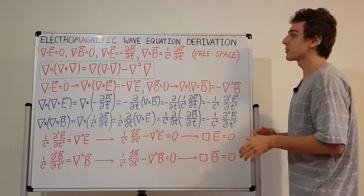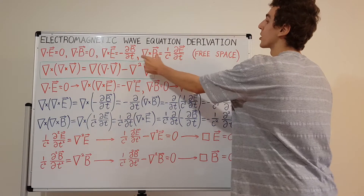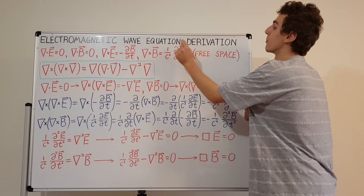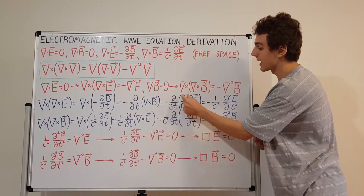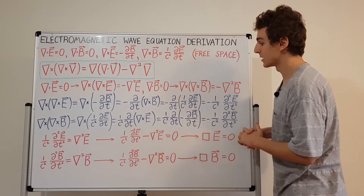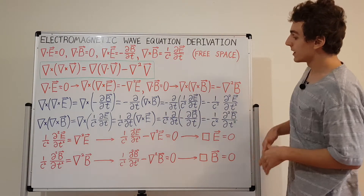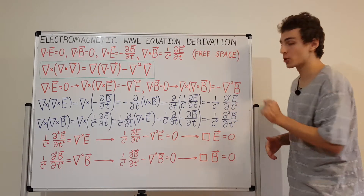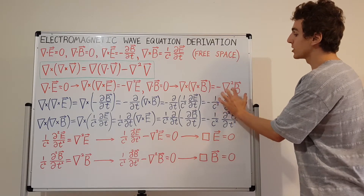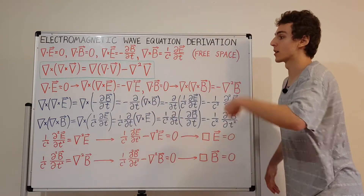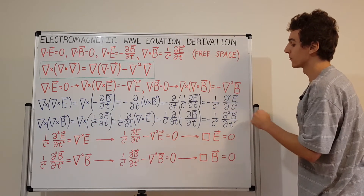Applying the time derivative twice gives us the second partial derivative with respect to time — it's a partial derivative because there are also dependencies on x, y, and z. So the curl of the curl of the electric field equals negative 1 over c squared times the second partial derivative with respect to time of the electric field. This is equivalent to what we had on the other side, since both are equal to the curl of the curl. Now let's do the same thing for the magnetic field using the same procedure but starting with Ampere's law first.